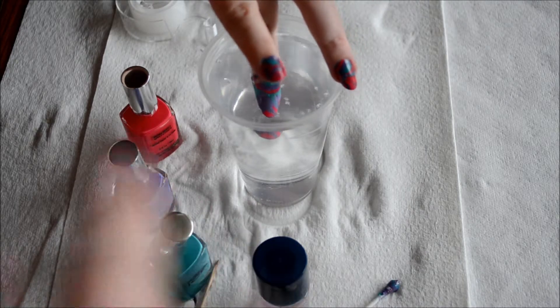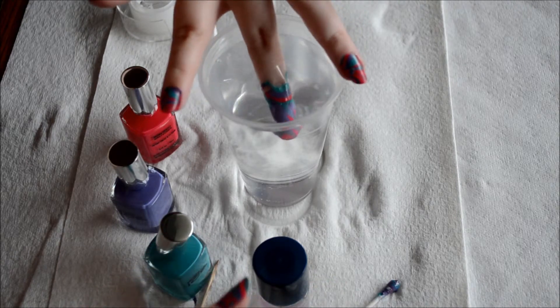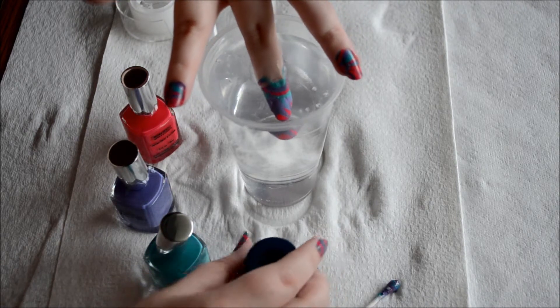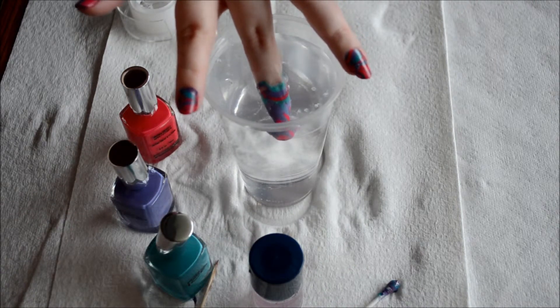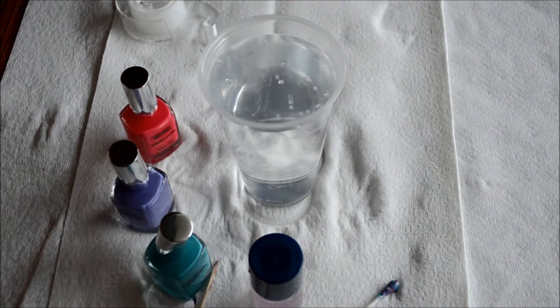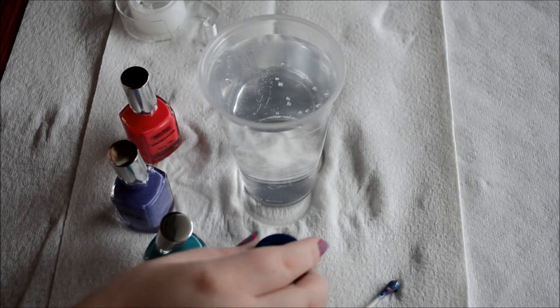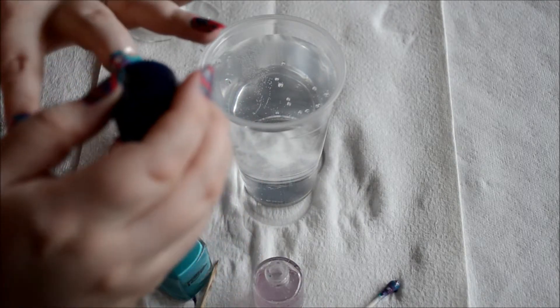And then as soon as you take it out of the water, you want to shake it, try and get as much of the water off of your nail as possible. And then you're going to throw the clear coat on right after. And you're going to want to use a lot of clear coat just so it's not sticking to the brush and you're pulling the nail polish off with it. So I'm going to shake it and clear coat.